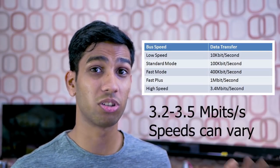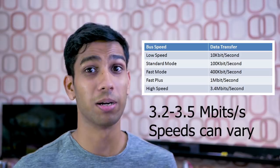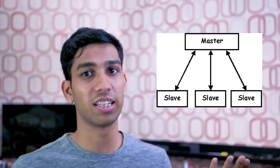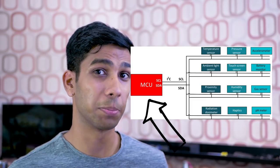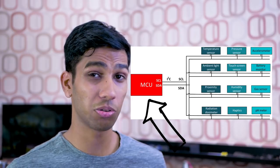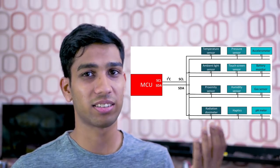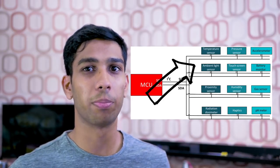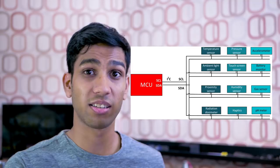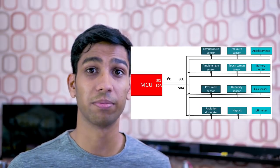Since then it's been periodically updated and now can support transfer speeds of up to 3.2 megabits per second. Now before we continue we must understand the two main devices within an I2C loop: there's a master and a slave. The master is transmitting information and the slave is receiving information. Masters are typically your microcontrollers or your brains, and slaves are usually your peripherals such as an external sensor or a display device.